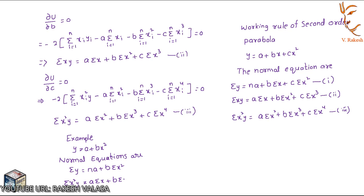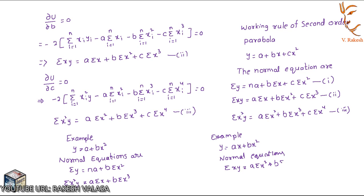Second example: y equal to ax plus bx square. The normal equations are: summation xy equal to a summation x square plus b summation x cube; and summation x square y equal to a summation x cube plus b summation x power 4. I hope this is very clear to everyone. Thank you for watching — please do like and subscribe my channel for more updates.